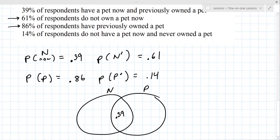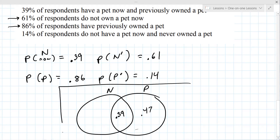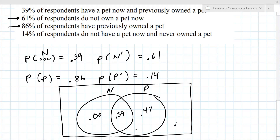For the Venn diagram: 0.86 covers the previously-owned region. The number in the overlap is 0.47, because those two parts must add up to 0.86. The whole diagram must add up to 1.00. That means there's zero in one region, which is unusual. The 0.14 goes outside the circles.